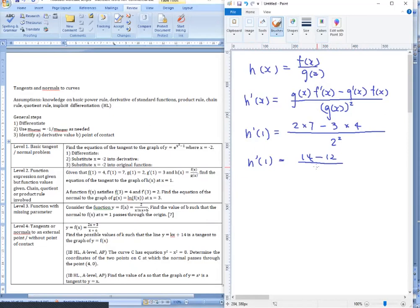So we just plug numbers in. I think you end up with h'1 equal to 14 minus 12 all divided by 2 squared which is 4 equals to half. We also need to find h1 itself. h1 can be just found by plugging in f1 and g1. My bad I got it backwards. It should be 4 over 2 which is 2. And right now we just have y minus 2 equals to half x minus 2 and that's your final answer.